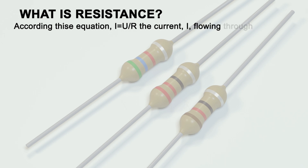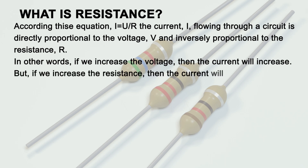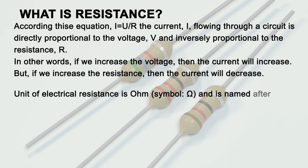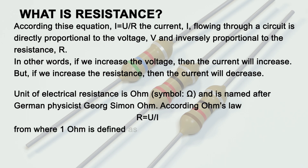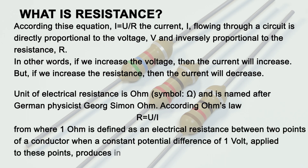According to the equation I equals U divided by R, the current I flowing through a circuit is directly proportional to the voltage V and inversely proportional to the resistance R. In other words, if we increase the voltage then the current will increase, but if we increase the resistance then the current will decrease.